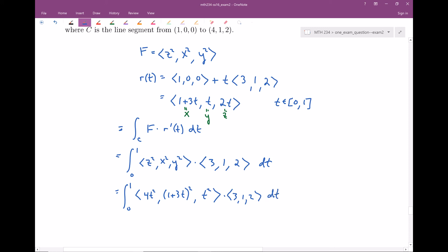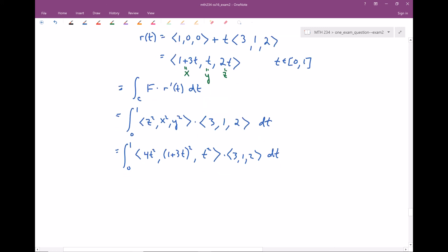Alright, so again, here's the setup. This is really the difficult thing to do. Now that we have this well set up, let's go ahead and compute. So the first thing, let's evaluate out that dot product. So let's see, four T squared times three. That's gonna be 12 T squared. Plus, my second component's multiplied together. That's just gonna be one plus three T, quantity squared. Times one, of course. And then finally, my last component's, T squared times two. That's just gonna be two T squared. Again, I'm integrating with respect to T.